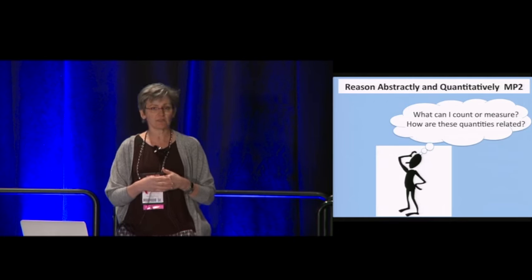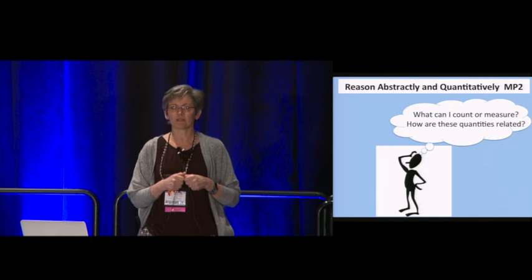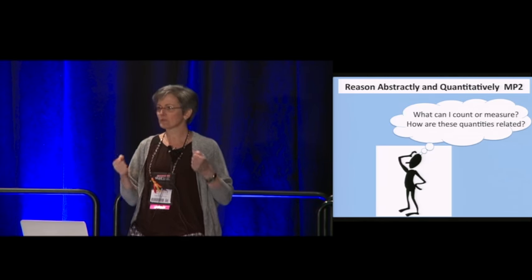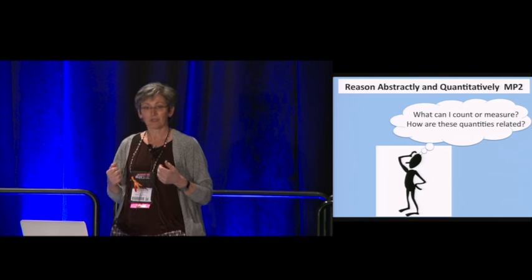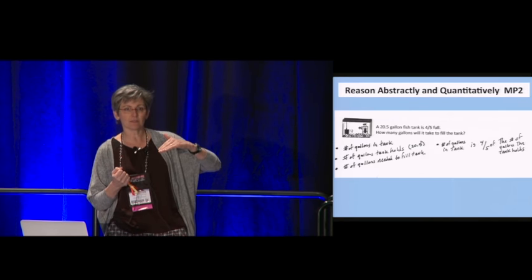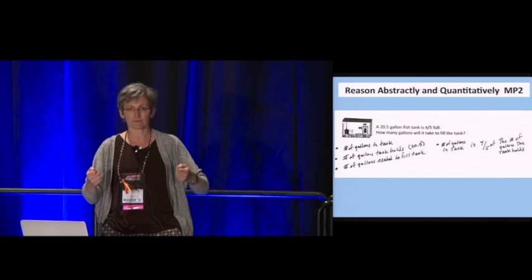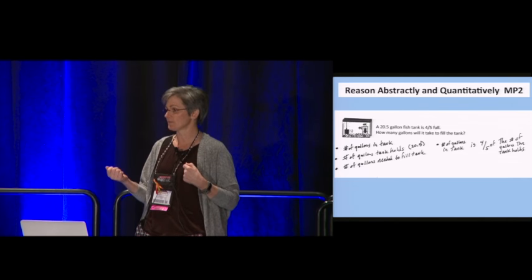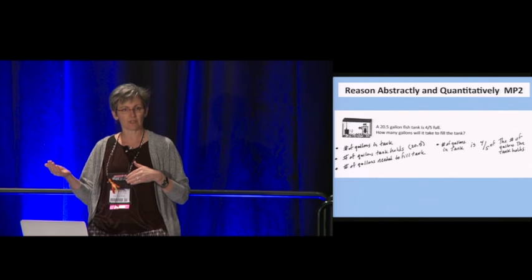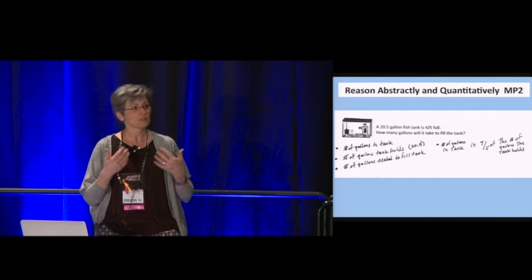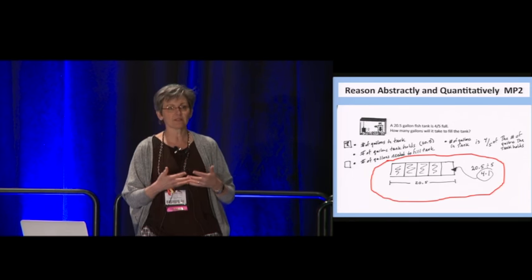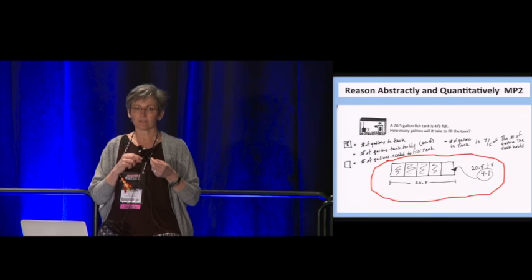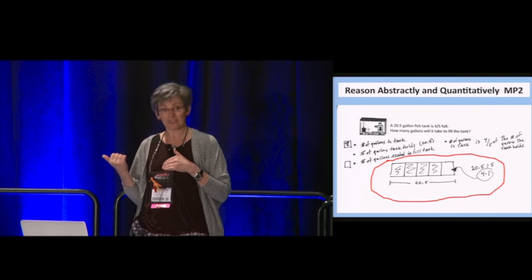If you're reasoning abstractly and quantitatively, you're paying attention to the quantities in a math problem. You're asking yourself, what can I count? What can I measure? You're looking for relationships between those quantities. When you do your work, you're digging behind the given numbers to the numbers of. You're identifying what the important quantities are, and you're looking for relationships between them. In this case, one quantity is four-fifths of another. If you're reasoning quantitatively, and you look at students' work, you may see a diagram where students are trying to actually see the quantities and how they're related. Creating a diagram can kick out hidden quantities, and it can help you see a solution strategy.